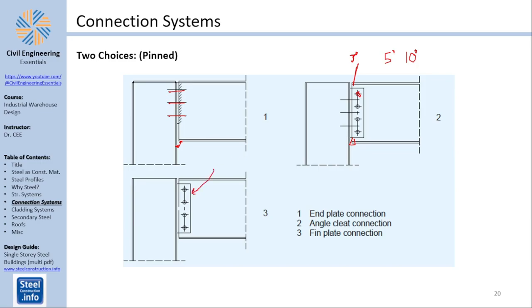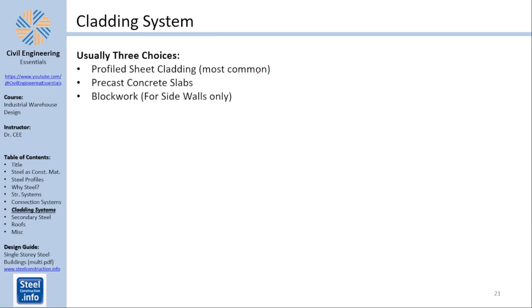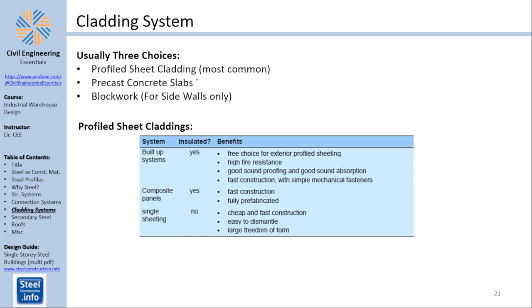Our cladding systems. There are three choices: profile sheet cladding, precast concrete slabs and block work. Profile sheet cladding is the most common which is basically some steel perforated sheet that can be single or double. Precast concrete slabs happen if you have for example mezzanine. If you have a mezzanine floor then you might consider precast concrete slabs to enable something to be constructed on top of it. Block work is usually for sidewalls only. Roof is usually pitched and the pitch of the roof is around six degrees or ten percent of slope.